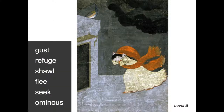Here, students discuss Our Changing World with an artwork from an Indian artist from the 1700s. Through this image from Level B, students learn the words gust, refuge, shawl, flee, seek, and ominous. Note that in the actual program, the vocabulary words and the level are not written on the image, as the focus is on oral vocabulary — the best way to accelerate vocabulary.